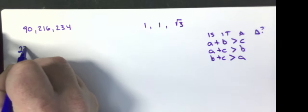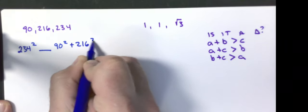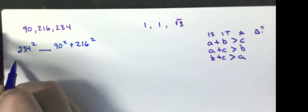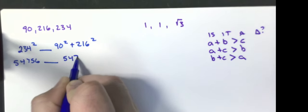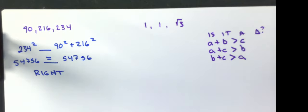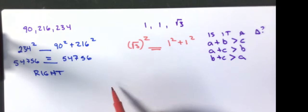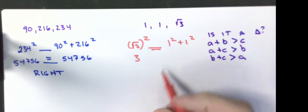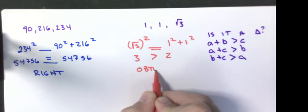You're always going to put the biggest piece on the left and you're going to compare it to the sum of the squares of the other two pieces. So on the left I get 234 squared which is 54,756. On the right I get 90 squared plus 216 squared which is 54,756. They are equal to each other so this is a right triangle. On the one on the right I'm going to take the square root of three squared compare it to one squared plus one squared. Square root of three squared is three, one squared is one, one squared is one, one plus one is two. Three is bigger than two so I have an obtuse triangle.